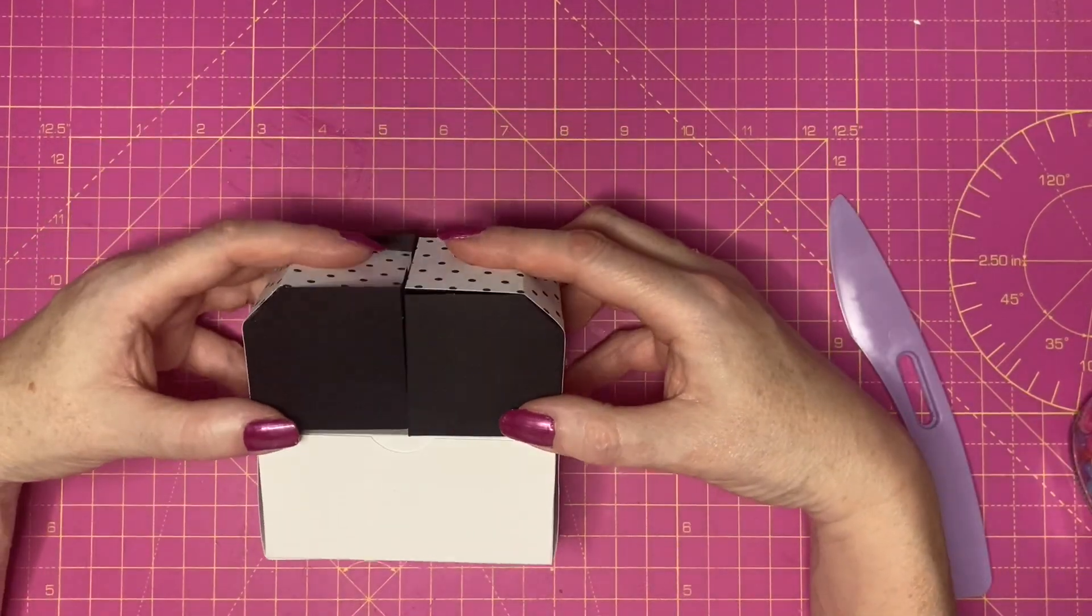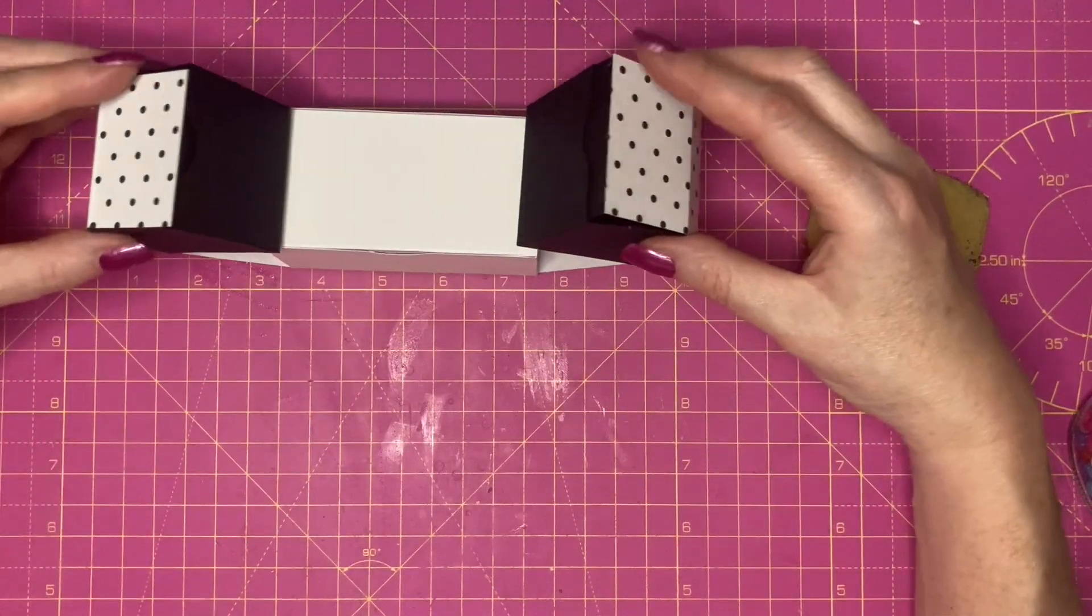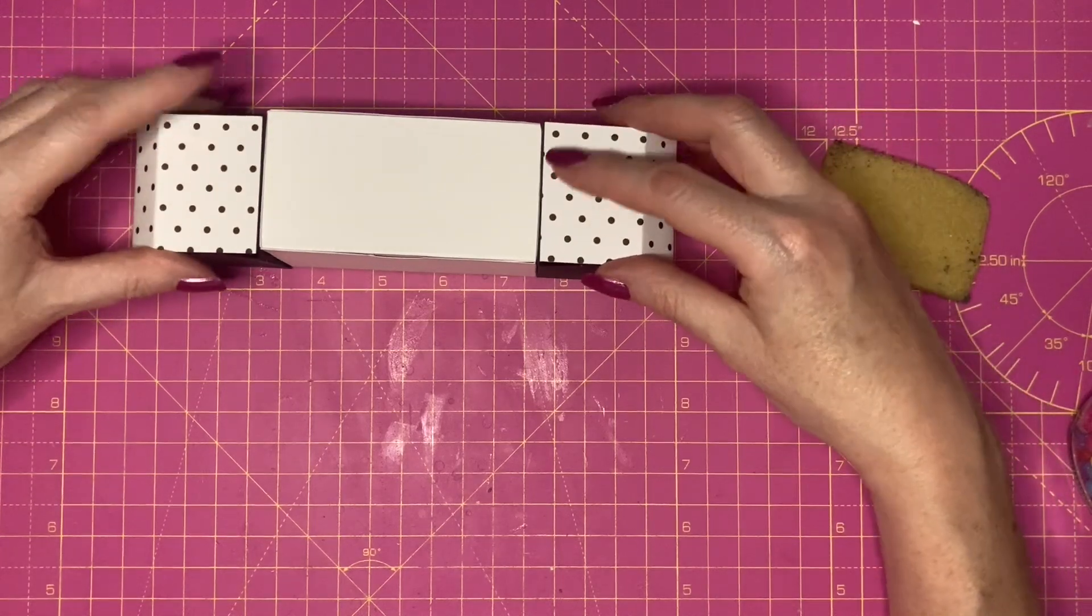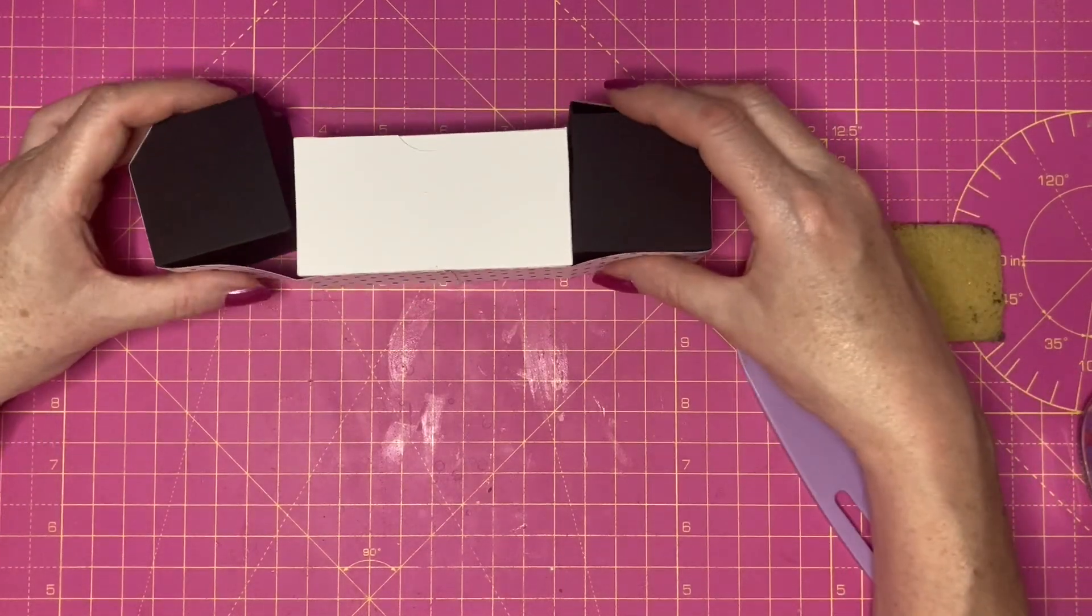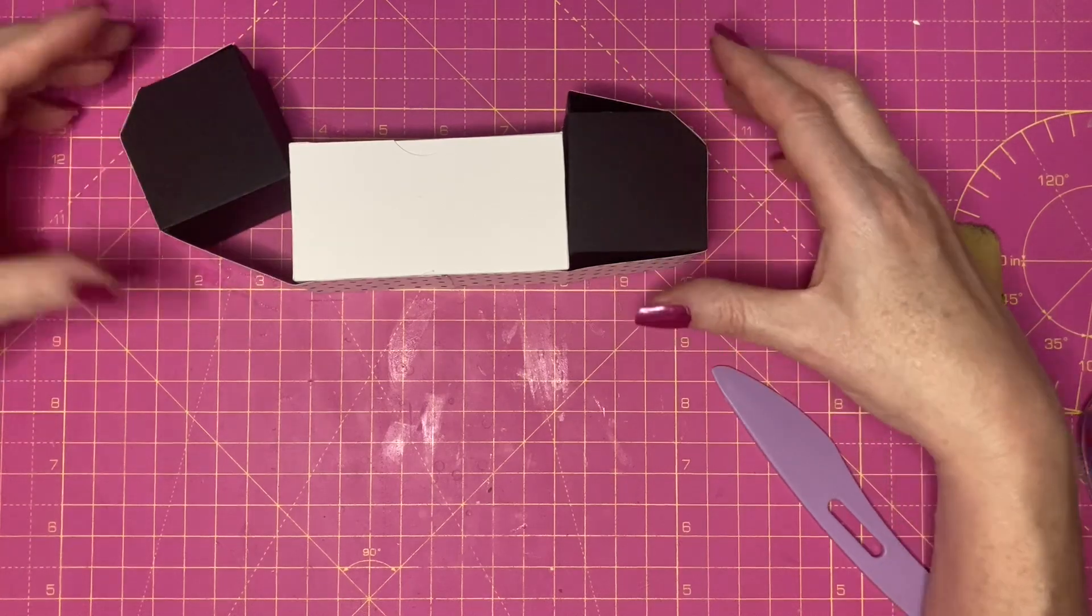So this is the box. The two top boxes come down and slot either side. I'm going to go ahead and carry on with the rest of my decoration.